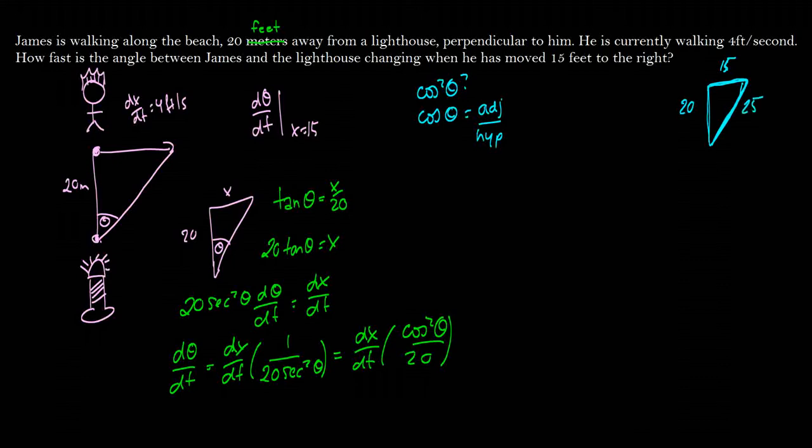So this is going to be equal to adjacent over hypotenuse, which is 20 over 25, which we can rewrite as 4 fifths, which means that cosine of squared theta will be 16 over 25.